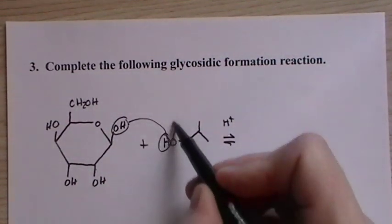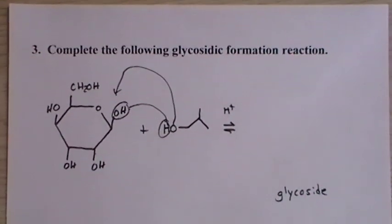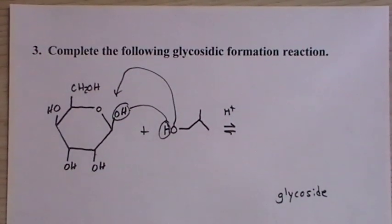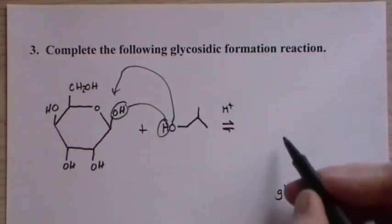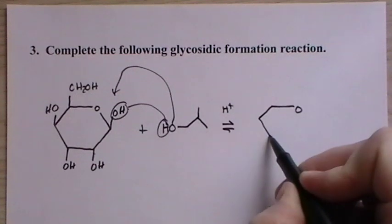These go off as water and we attach the remaining alkoxy group onto the ring. So, it's an acetal that we're forming here, so what you do is just draw the ring.